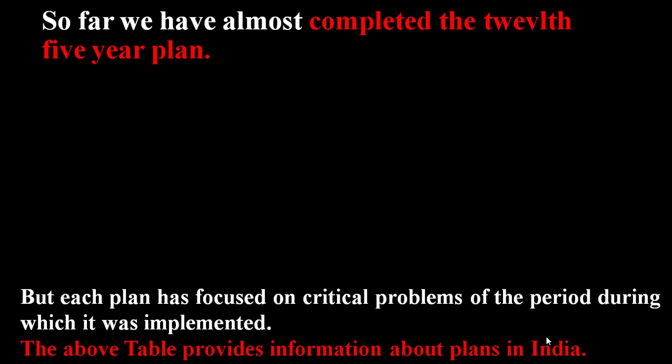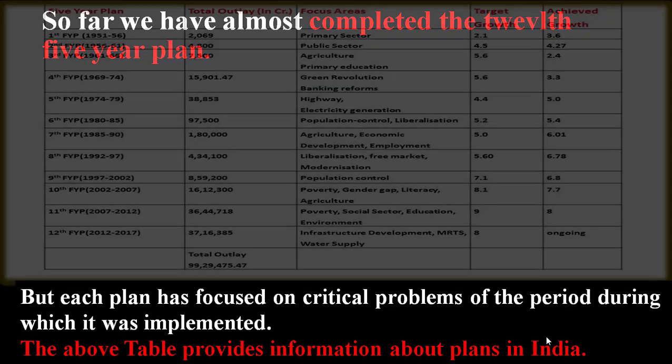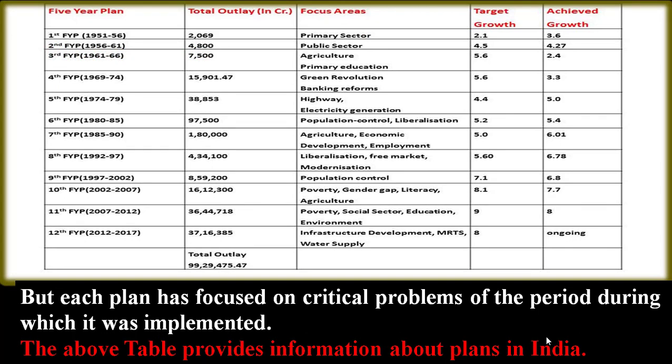Each plan focused on critical problems of the period during which it was implemented. A table provides information about the plans in India, from the First Five-Year Plan up to the Twelfth Five-Year Plan, showing focused areas, growth targets, and achieved growth for each plan.